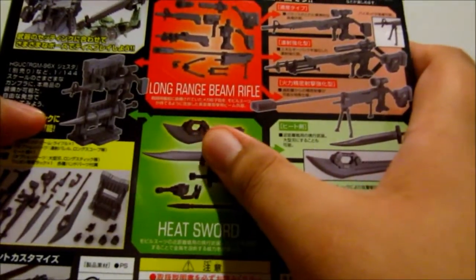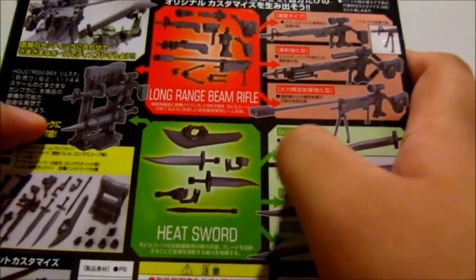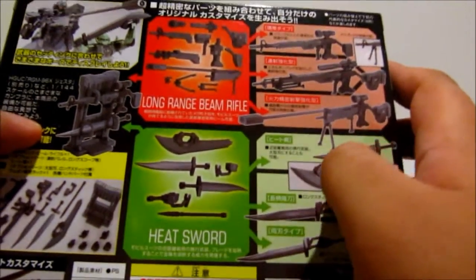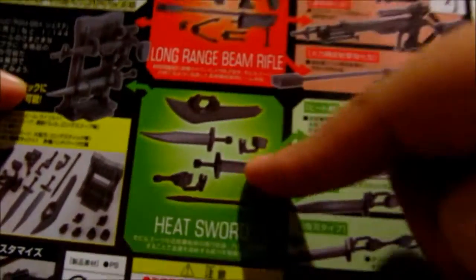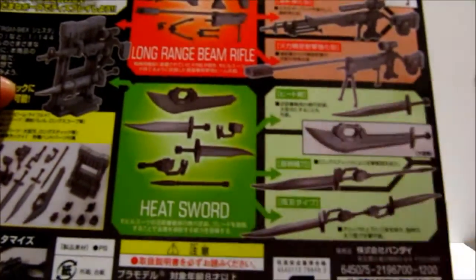And this one monstrous machete-like Heat Sword. And of course it comes with parts to make a staff right here.